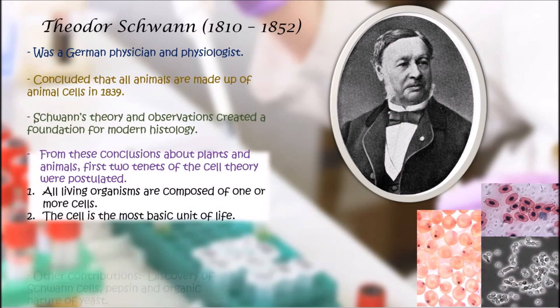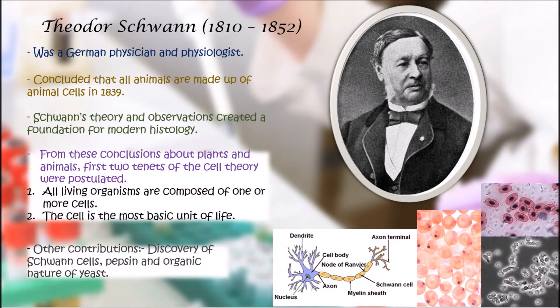Theodore Schwann was a German physician and physiologist. In 1839, he concluded that animal tissues are made up of animal cells. Schwann's theory and observations created the foundation for modern histology — the branch of biology that studies the microscopic anatomy of biological tissues. From these conclusions about plants and animals, the first two tenets of cell theory were postulated. Schwann's other contributions include the discovery of Schwann cells, the organic nature of yeast, and defining the term metabolism.